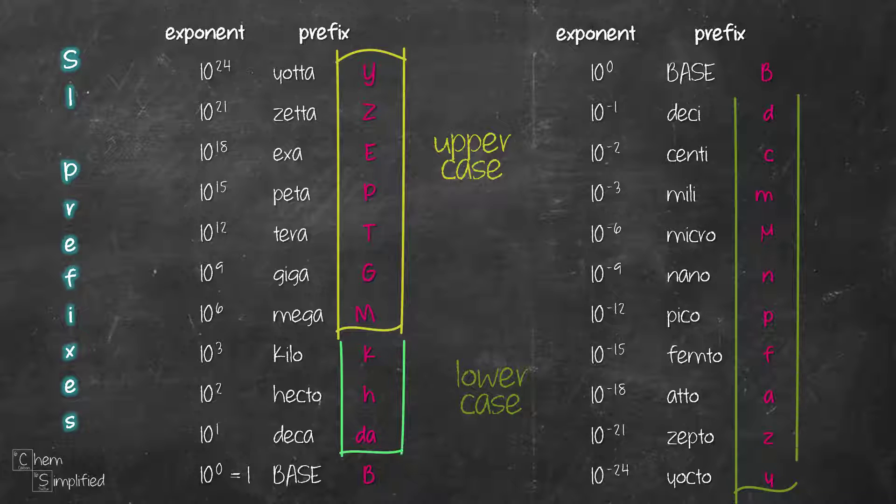For Deka, it's represented by two letters DA. For Micro, it's represented by a Greek letter that looks like a U with a tail in front.